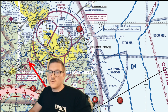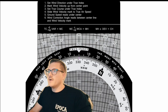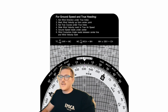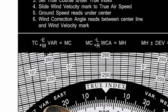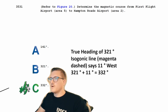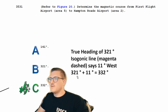If you happen to forget whether to add or subtract the magnetic variation, you can look at your E6B — there's usually a tip on there. On your standard E6B, you'll see this equation: true course, subtract east variation or add west variation, and that gives you your magnetic course. Our true heading was 321. Taking into account the isogonic line of 11 west, we add: 321 plus 11 equals 332. And that's going to be answer C.